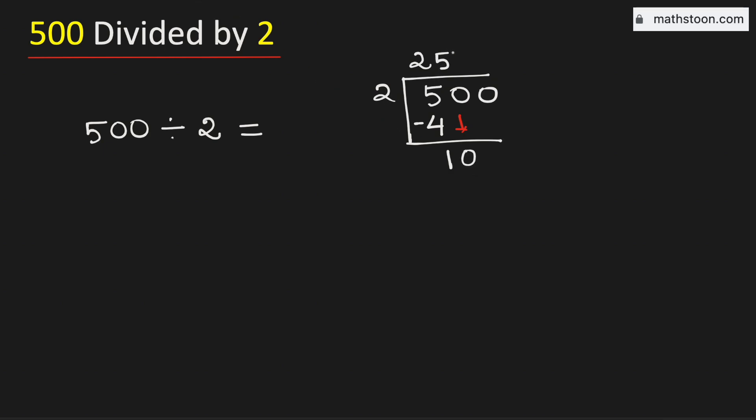Now 2 times 5 is 10. Subtract, we get 0. As 0 is less than 2, that is why we will bring down this number 0 here.